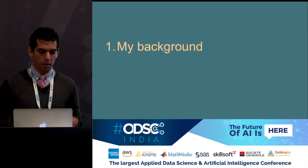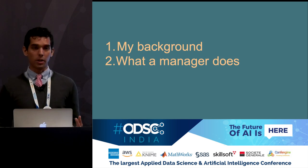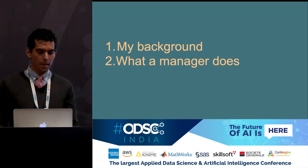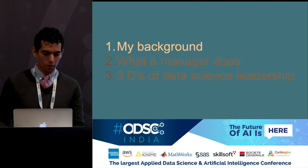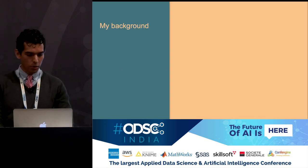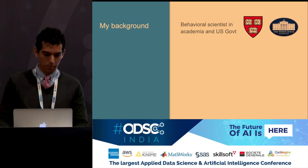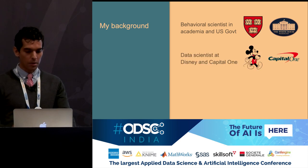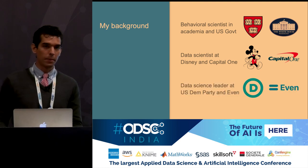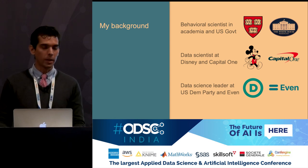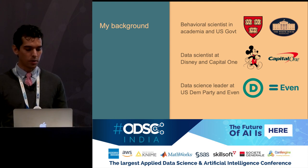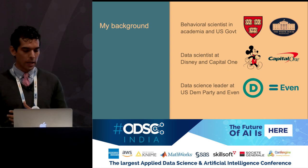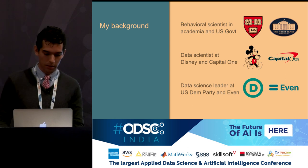I want to give you an overview of my background. I'm trained as a behavioral scientist. I've had a chance to work in the White House Social and Behavioral Sciences team during the Obama administration, but most of my professional life I've spent as a data scientist — as an individual contributor at the Walt Disney Company and at Capital One, and then as a data science leader at both the Democratic National Committee and at EVEN, a fintech startup based out of California. This diverse set of experiences has given me a chance to learn about data science and its leadership from a small fintech company to one of the largest media companies in the world, across domains from banking to politics to entertainment and financial technology.